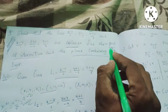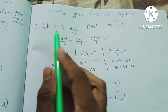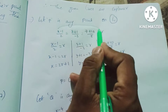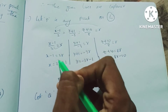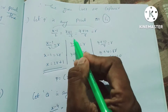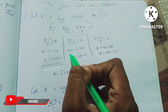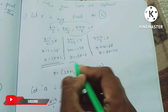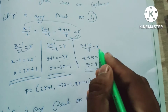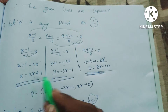Second part: find the point of intersection. Let P be any point on line 1 with parameter R. Then x = 2R+1, y = −3R−1, z = 8R−10.